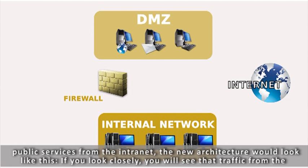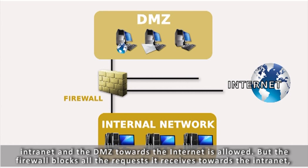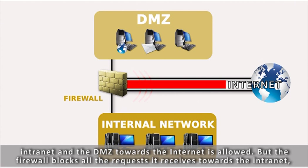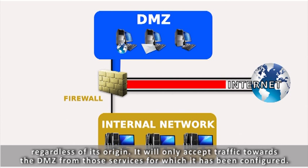If you look closely, you will see that traffic from the internet and the DMZ towards the internet is allowed. But the firewall blocks all the requests it receives towards the intranet, regardless of its origin. It will only accept traffic towards the DMZ from those services for which it has been configured.